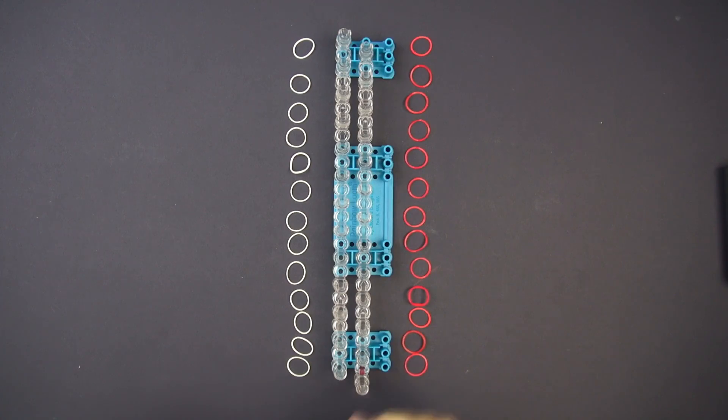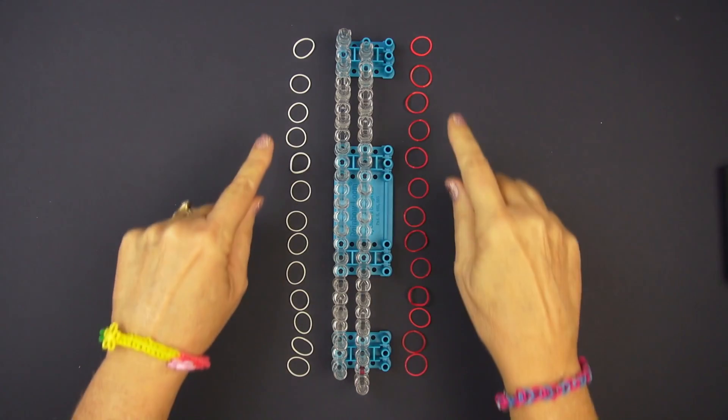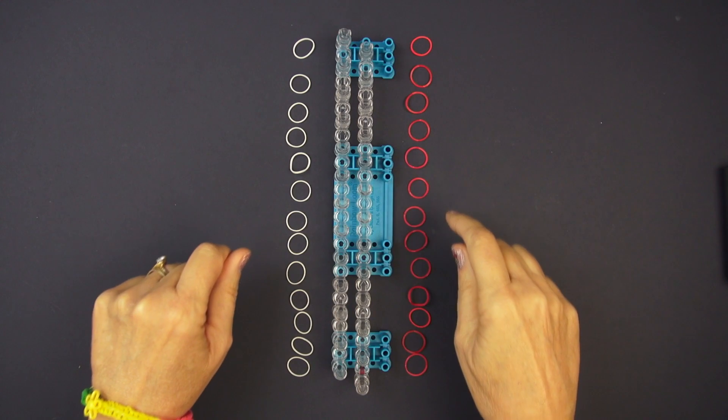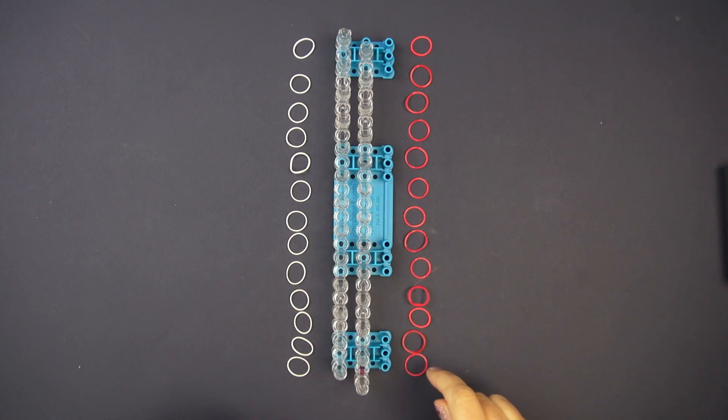For this single loop bracelet you're gonna need 26 rubber bands. Now especially if this is the first time you've made a bracelet I would recommend highly that you use two colors, a light and a dark. You'll be able to see what you're doing a lot better.